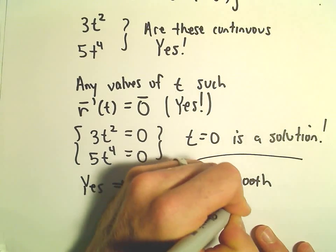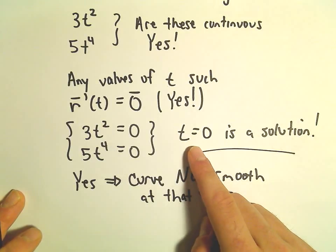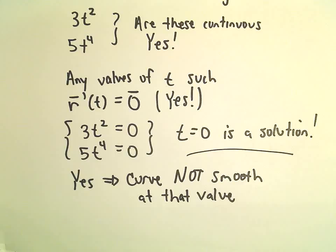So in this case, we would know at the value t equals 0, if we were to graph our curve, we would get a curve that's not smooth at that value.